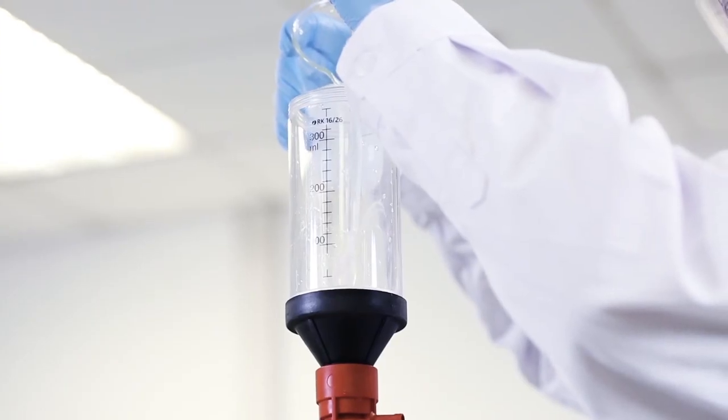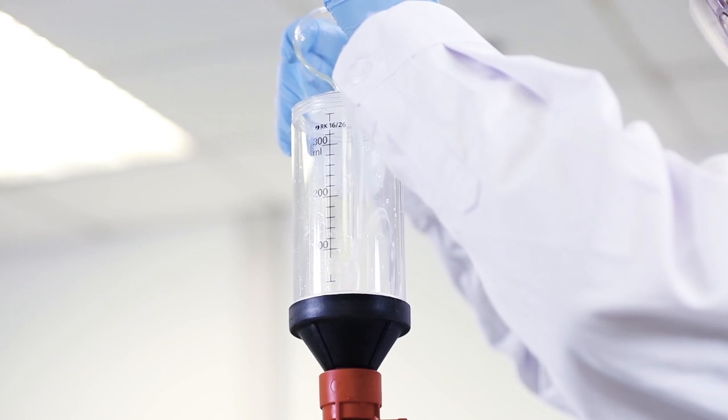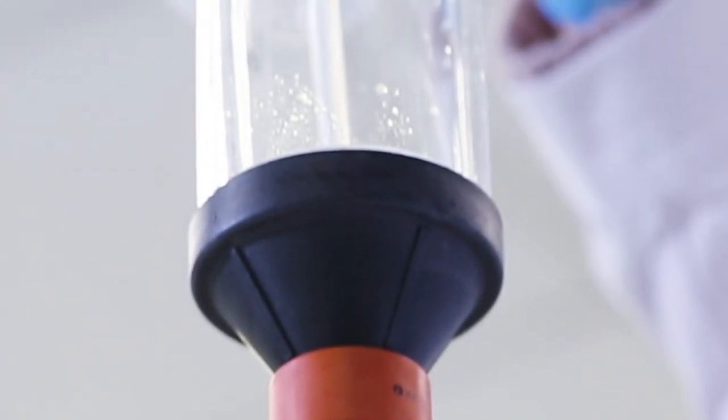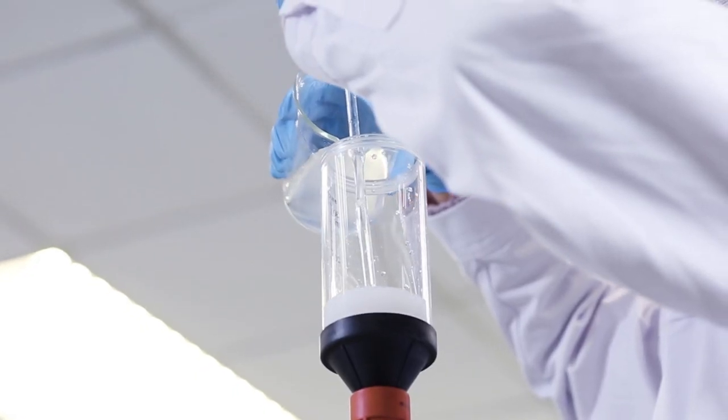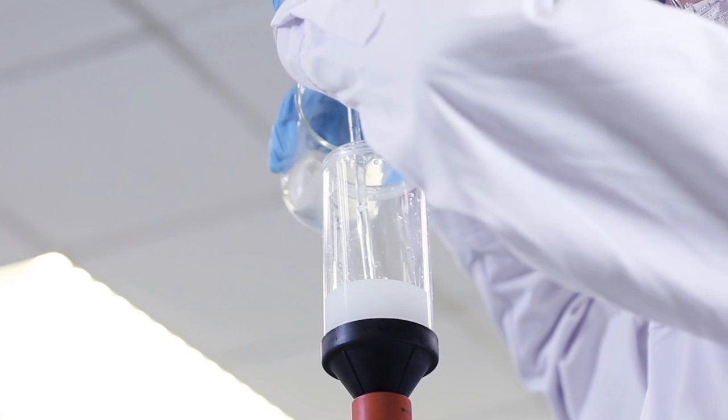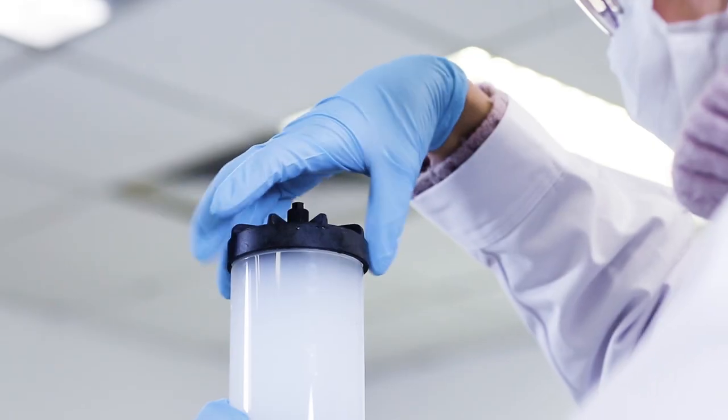Pour the slurry down a glass rod or spatula held against the wall of the column. This will minimize formation of air bubbles. It is crucial to pour all the resin at once without stopping. Add additional packing solution if the slurry does not reach the top.